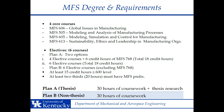For the Master's in Manufacturing Systems Engineering, we have a Plan A and a Plan B option. Plan A is a thesis option, which requires 30 hours of coursework plus thesis research. Plan B is the non-thesis option, which is 30 hours of coursework, with non-thesis requirements determined by a committee and faculty advisors at the end of your 30 hours of coursework.